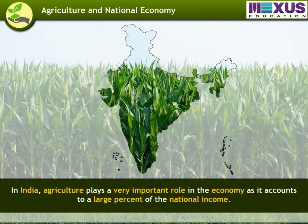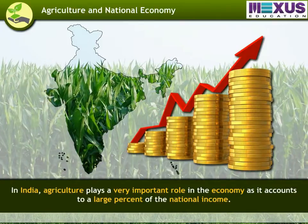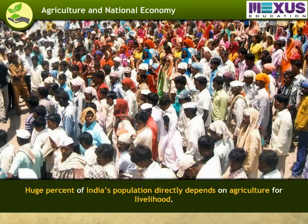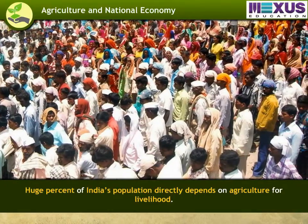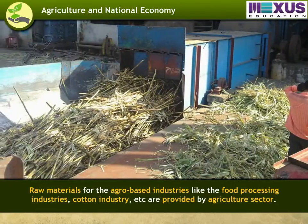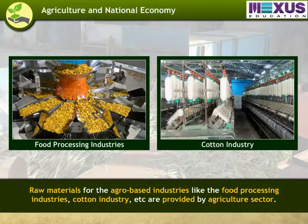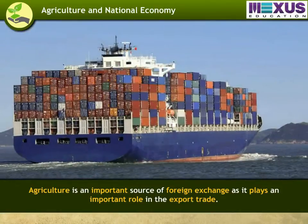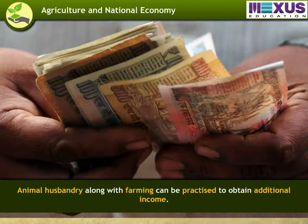In India, agriculture plays a very important role in the economy as it accounts for a large percent of the national income. A large number of people are employed in the agricultural sector, and a huge percent of India's population directly depends on agriculture for livelihood. Raw materials for agro-based industries like the food processing industries, cotton industry, etc. are provided by the agriculture sector. Agriculture is also an important source of foreign exchange as it plays an important role in export trade. Animal husbandry along with farming can be practiced to obtain additional income.